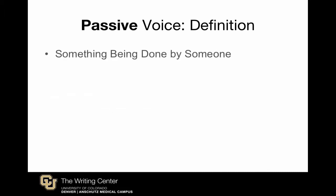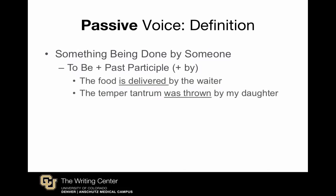The passive voice occurs when something is being done by someone. In grammatical terms, it's formed with a to-be verb, plus the past participle form of a verb, plus whomever is doing the action, as in these two examples: 'The food is delivered by the waiter,' and 'The temper tantrum was thrown by my daughter.'